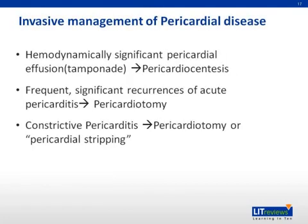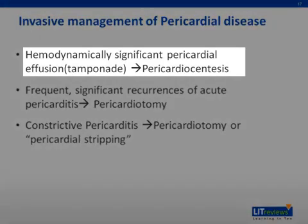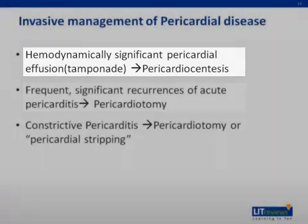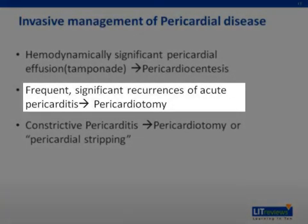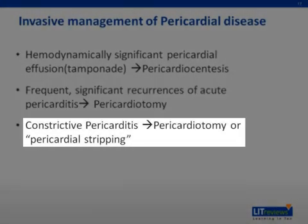Regarding invasive management of pericardial disease: only if there is an associated pericardial effusion that is hemodynamically significant and causing tamponade would you need to perform an urgent pericardiocentesis. Rarely, if someone is having frequent significant recurrences of acute pericarditis, surgeons may consider a pericardiotomy. For constrictive pericarditis causing significant morbidity, a pericardiotomy or pericardial stripping procedure may be indicated.